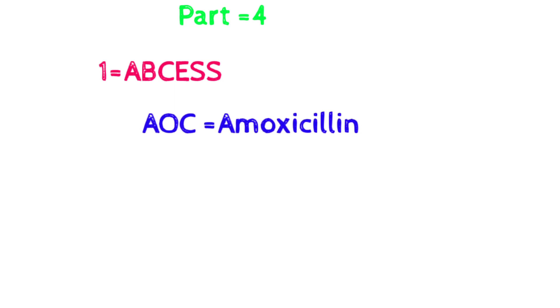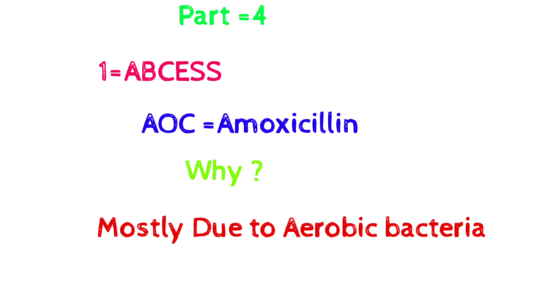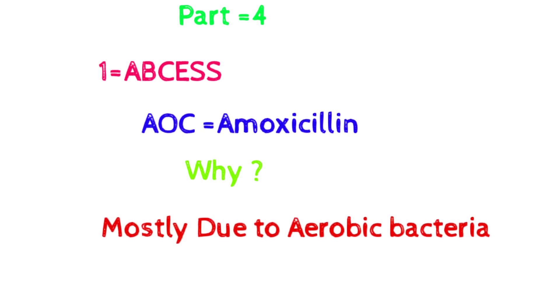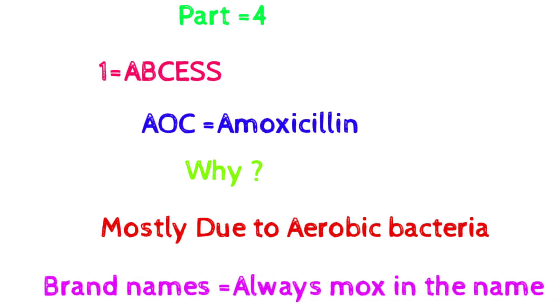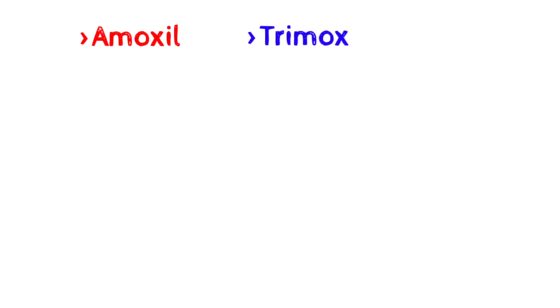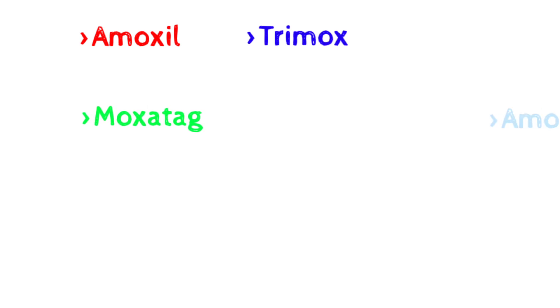The first condition is abscess. In abscess, the antibiotic of choice is amoxicillin, because abscess is mostly due to aerobic bacteria, and for aerobic bacteria we prefer amoxicillin. Now for the brand names of amoxicillin — always there will be 'mox' in the name, like Amoxil, Trimox, Moxatag, and Amoxicot.